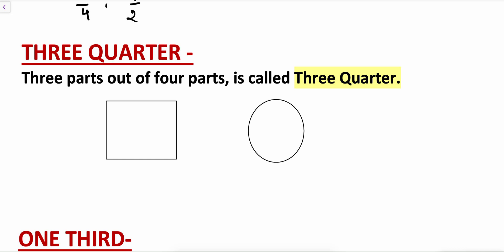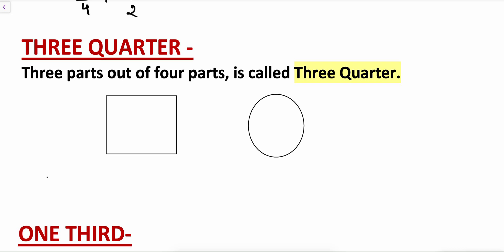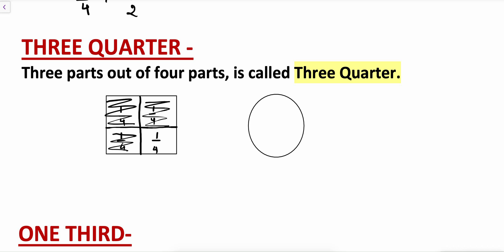Now let's see three-quarter. Three parts out of four parts is called three-quarter. Suppose if I divide this square into four equal parts — each portion is one by four. Now the three parts out of four: this is one part, this is two parts, and this is three parts. So this three parts out of four parts — these shaded portions are called three by four, or three-quarter.